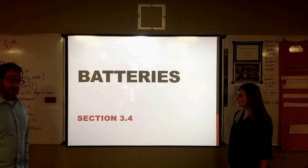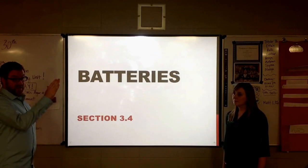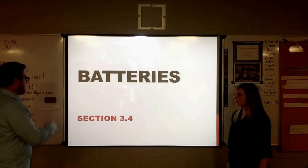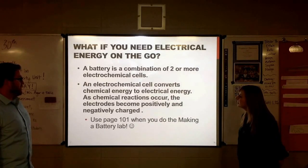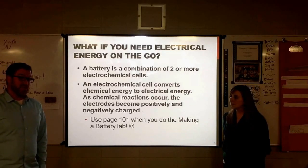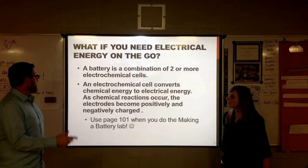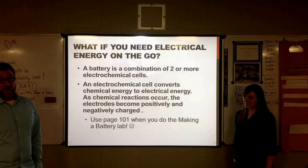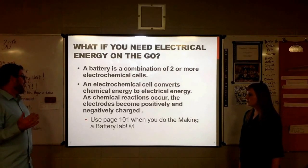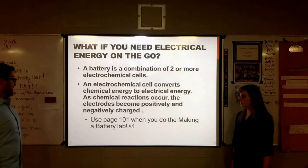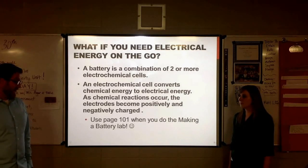All right, we're going to talk next about batteries. Section 3-4 deals specifically with how we take chemical energy and convert it into electrical energy. So, in order to do that, we need to, again, consider kind of the different parts of the battery. We've been using batteries a lot lately, and now is our opportunity to kind of dig in and see how they work. So, a battery is a combination of two or more electrochemical cells. Now, an electrochemical cell is basically a fancy term for a battery, converts chemical energy to electrical energy, and as chemical reactions occur, the electrodes become positively and negatively charged.